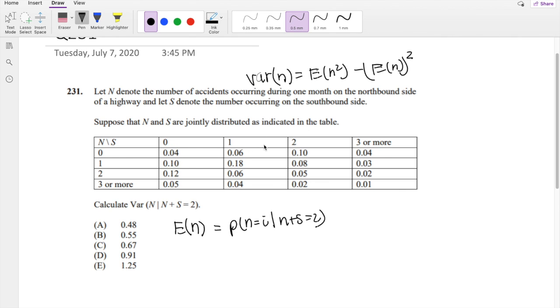Okay, 0, 0, no, 0, 1, no, 0, 2, yeah. 0 plus 2 is indeed 2, and so is this one, and so is this one.